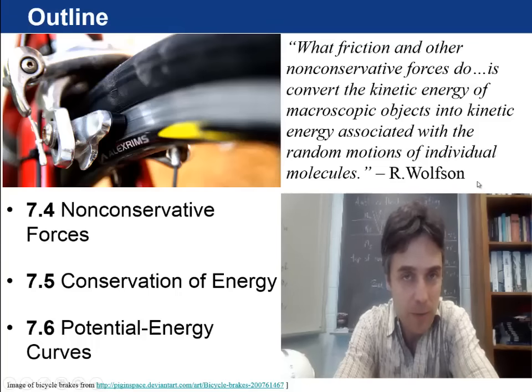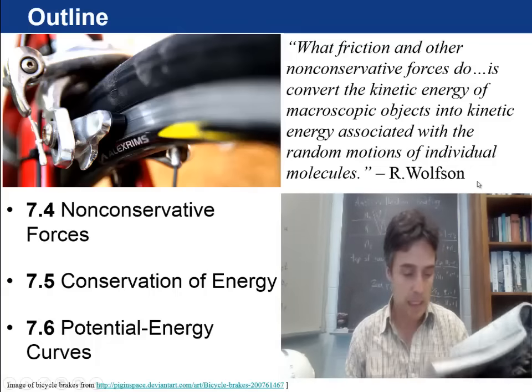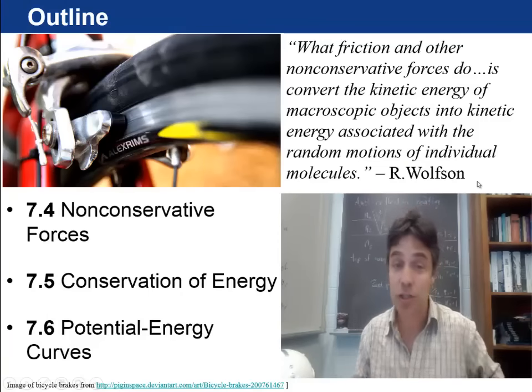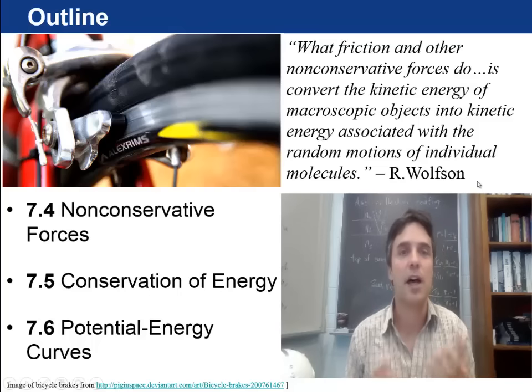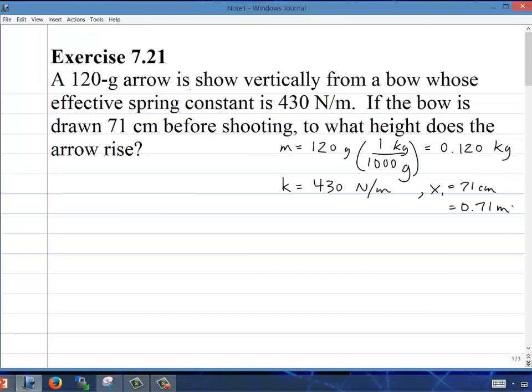Before we get going with non-conservative forces, I wanted to do an exercise for you, an example of an end-of-chapter problem that uses conservation of mechanical energy, just to show you that this energy stuff is all designed to make your life easier. Let's work through exercise 21 from Chapter 7. A 120-gram arrow, so let's write down the mass m = 120 g = 0.120 kg, is shot vertically from a bow whose effective spring constant is 430 N/m. If the bow is drawn 71 centimeters before shooting, so x = 71 cm = 0.71 m.